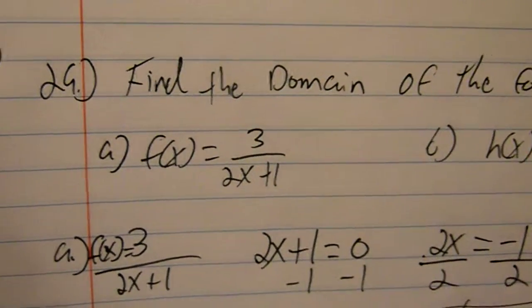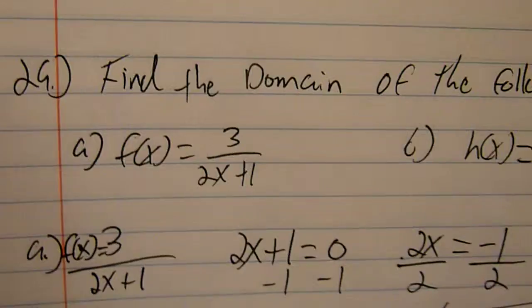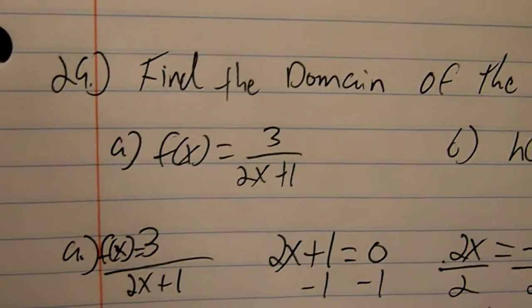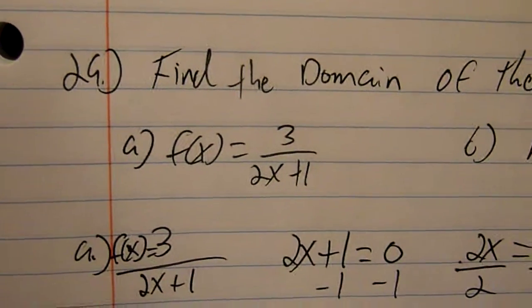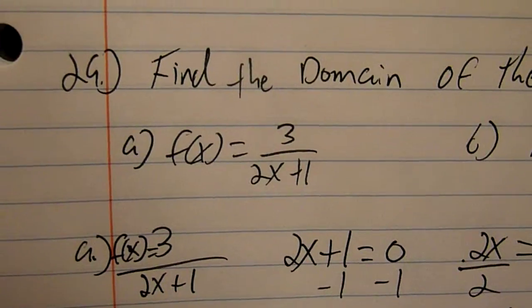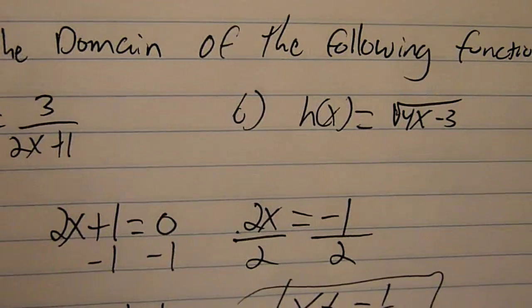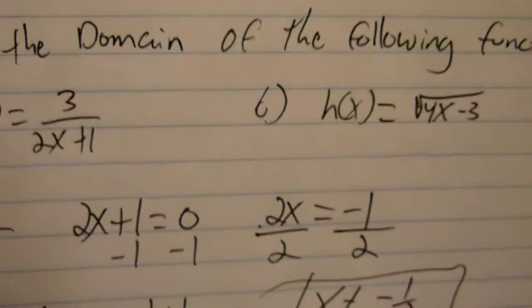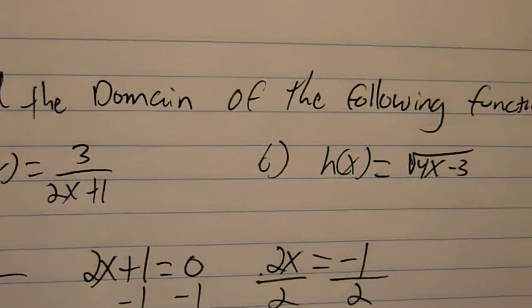Alright, this is problem 29 on the practice exam. Find the domain of the following functions. Part a, f of x is equal to 3 over 2x plus 1. Part b, h of x is equal to the square root of 4x minus 3.